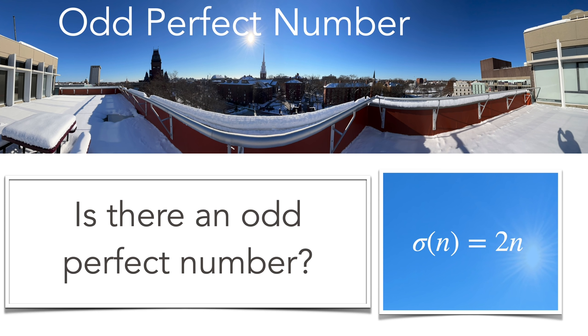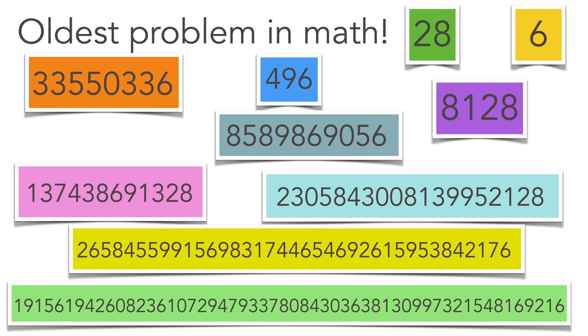A number is called perfect if it's the sum of its proper factors. All known perfect numbers are even. The question is, is there an odd one? Probably the oldest problem in math. Here's a list of all known perfect numbers. Six is perfect because one plus two plus three is six. And all these known perfect numbers are even.